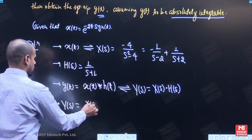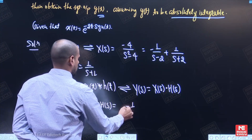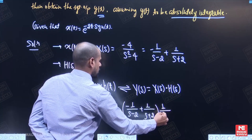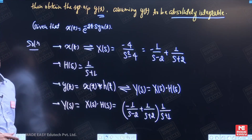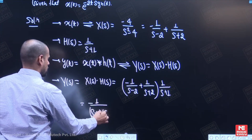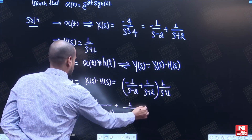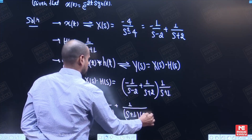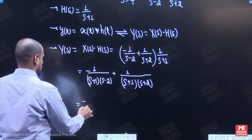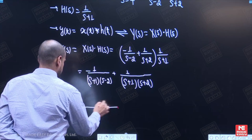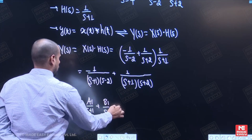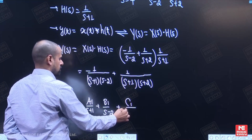So Y(s) equals X(s) into H(s), which is: [minus 1 upon (s minus 2) plus 1 upon (s plus 2)] times 1 upon (s plus 1). This gives: minus 1 upon [(s plus 1)(s minus 2)] plus 1 upon [(s plus 1)(s plus 2)]. Now we have to perform partial fractions. We write this as A1 upon (s plus 1) plus B1 upon (s minus 2) plus C1 upon (s plus 2).